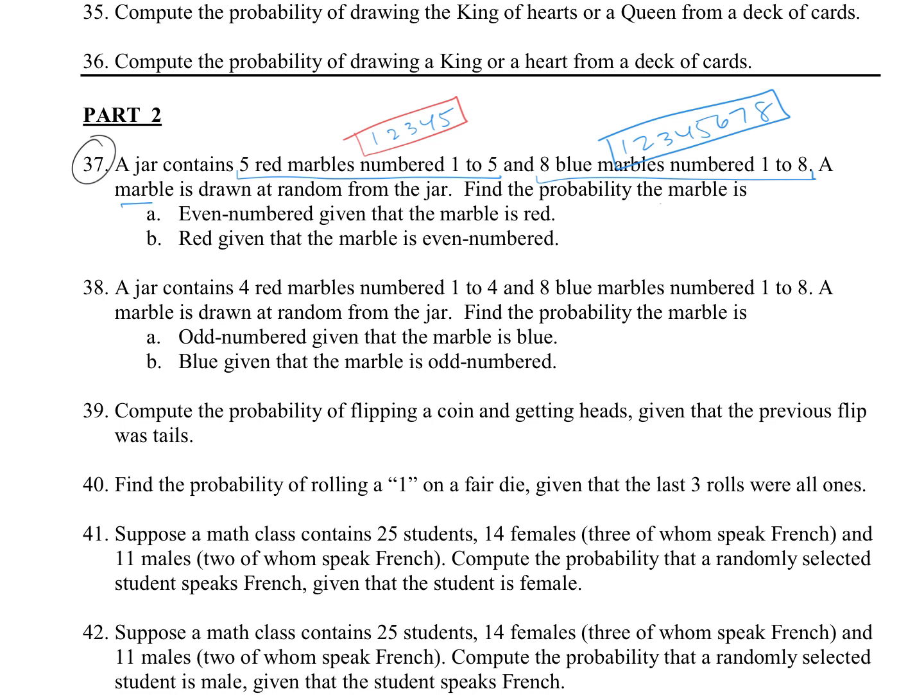So it says that we are going to draw a marble at random from the jar. Find the probability that the marble is even-numbered given that the marble is red. So we have a conditional probability. We're looking at the probability that we are even given that we already know that we're looking at a red one. So we're focused in on those red numbers. The even ones would be 2 and 4, so that would be 2 out of the 5.